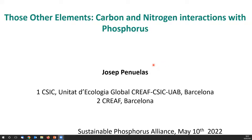Josef begins: as Jim and Elizabeth told us, we need to take into account phosphorus but also consider its interactions with carbon and nitrogen — these other elements. Like Elizabeth, he and his group are interested not only in carbon, nitrogen, and phosphorus, but in all the other elements as well. They call them the 'elementome,' though they have difficulties with editors who don't like the word. He'll put forward two examples of the importance of these interactions.